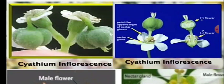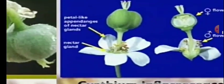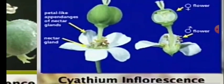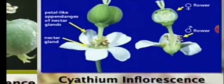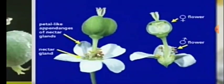The second type is Cyathium inflorescence. A good example is Euphorbia pulcherrima. On the left side you are observing the female flower condition, and at the base there are male flowers. Petal-like structures are seen and a nectary gland is present.